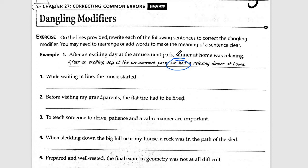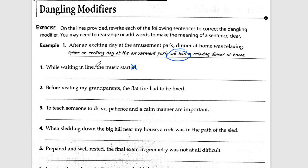'While waiting in line, we heard the music start.' Don't remove anything — you can modify verb tense. That clarifies what is waiting in line. It doesn't have to be 'we' — it could be 'he heard the music start' or 'the crowd heard the music start.' It doesn't matter who or what, as long as it's realistic. As long as there is an object there to be modified that works, it becomes clear.